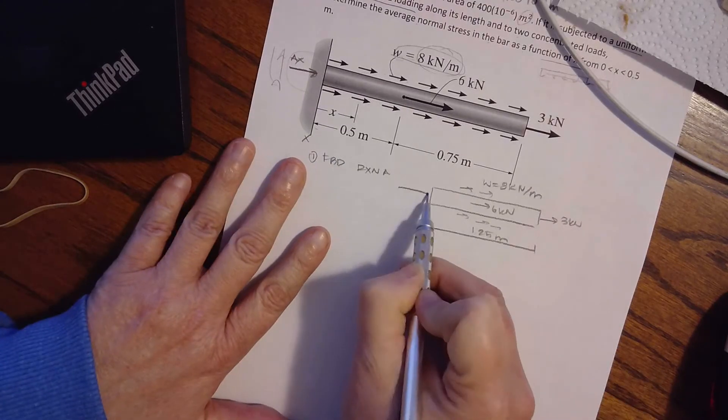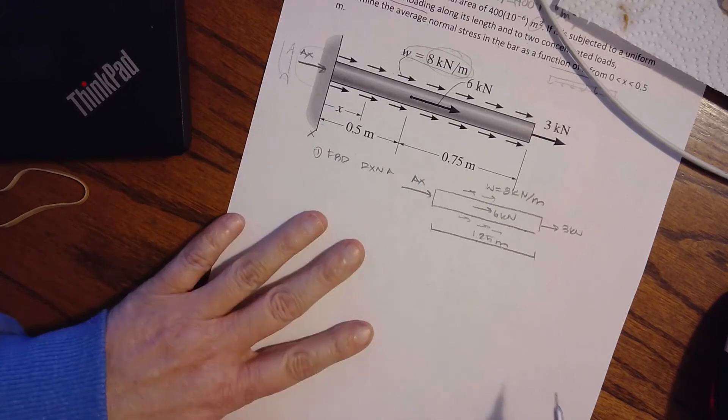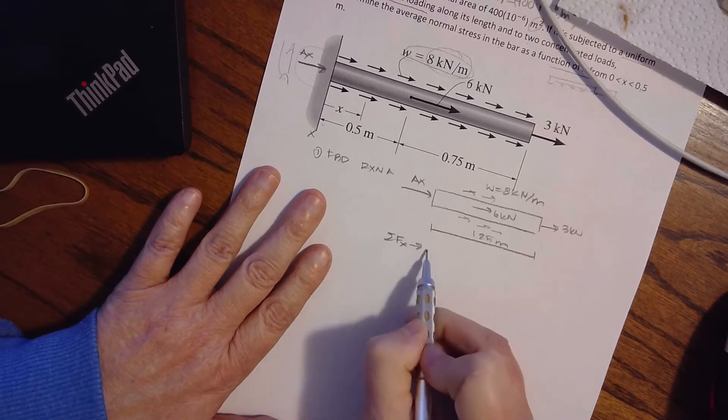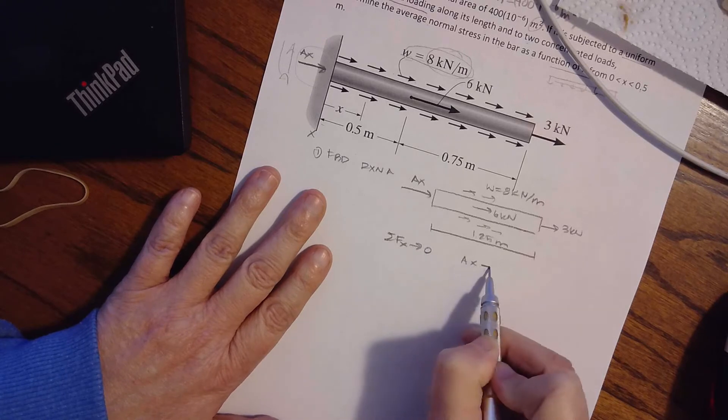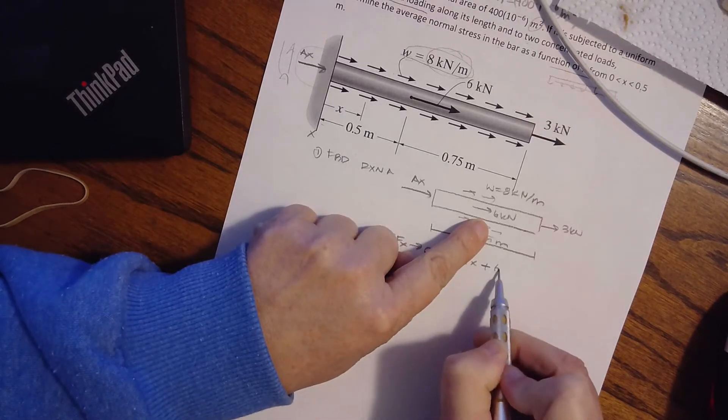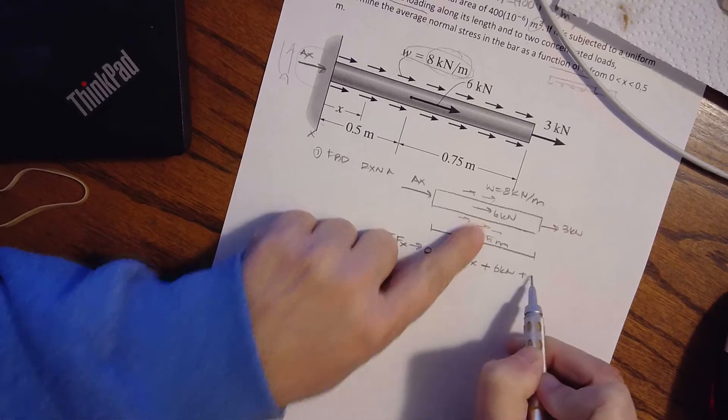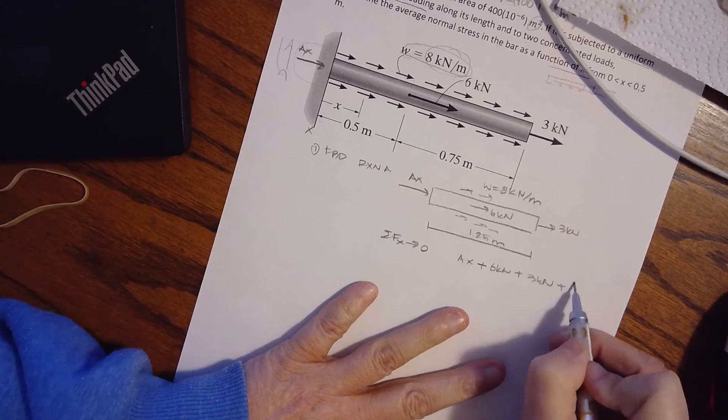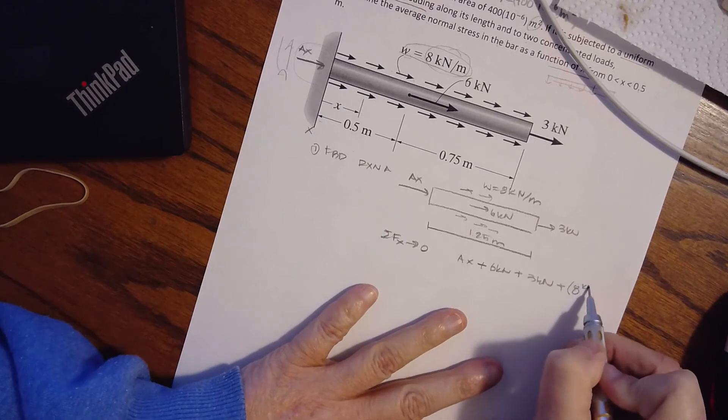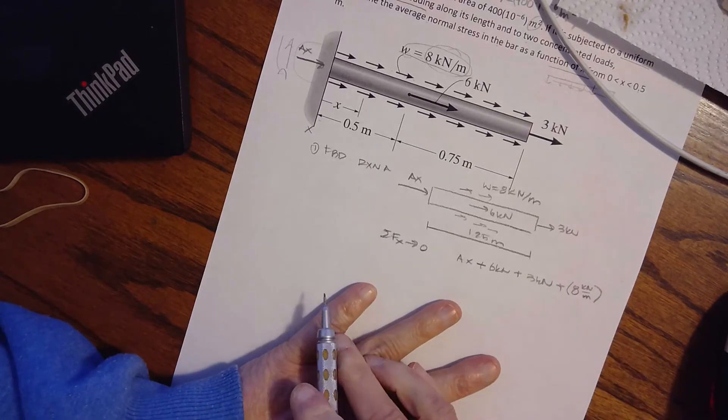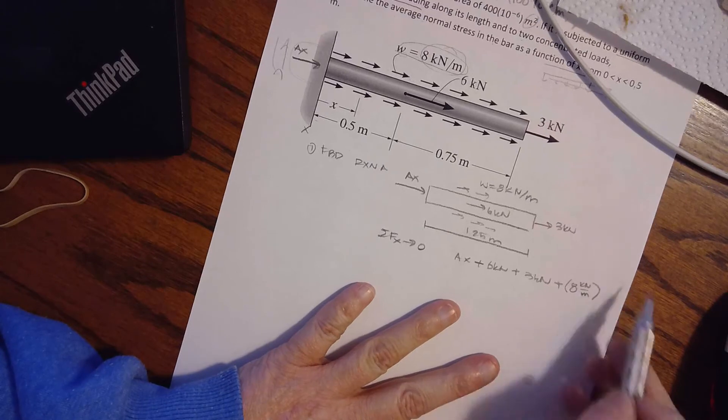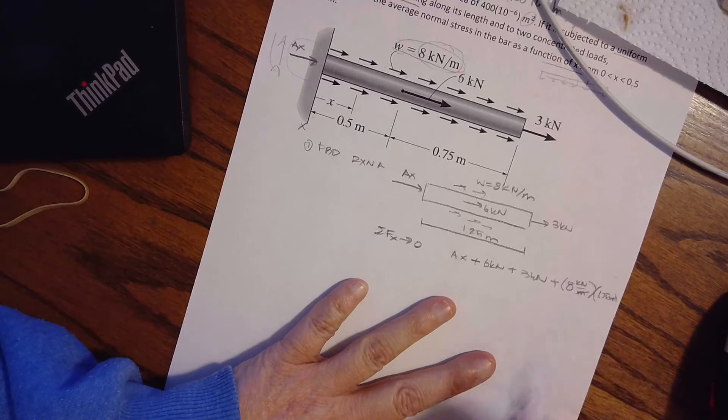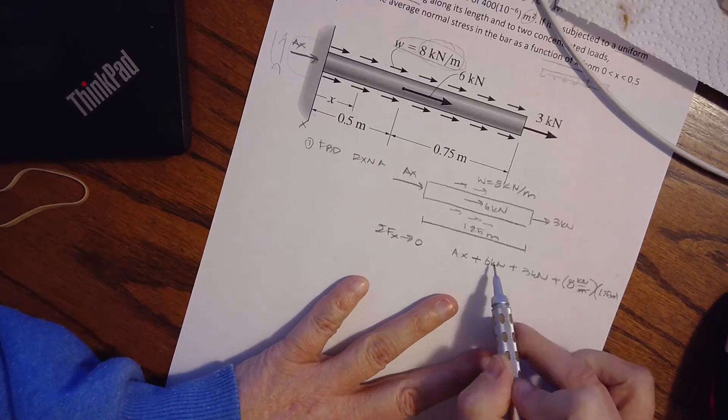So I'm going to assume that AX goes to the right, even though I can clearly see it's going to go back to the left, but just keep it consistent. Summing forces equals zero, AX plus six kilonewtons, plus three kilonewtons, plus I've never seen an axial load like this. What do I do? Look at the units, eight kilonewton per meter. That is not the right units. How can I get into the right units? I can multiply it by meters. And look at that. My meters cancel out, and I'm left with kilonewtons, kilonewtons, kilonewtons.